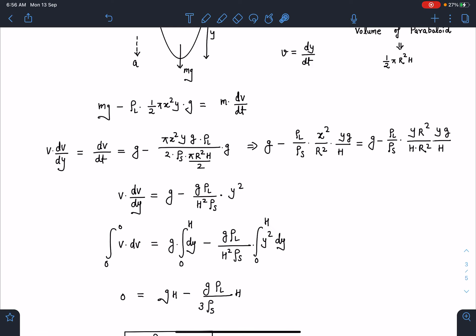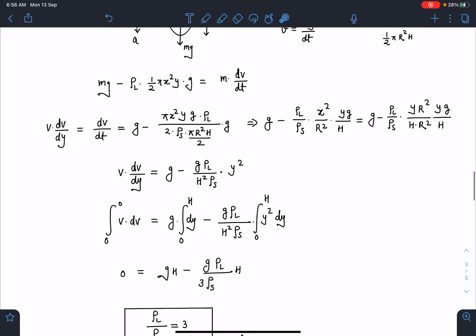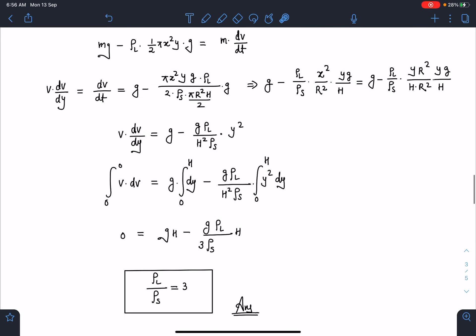Now you can see here we will get here h cube by 3 and this h square will go. So we are going to get 0 is equal to gh minus g rho l by 3 rho s times h.